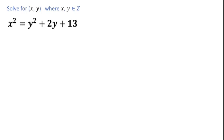Welcome to Definite Mind. In this question we have to find all pairs of x, y for this equation where x, y are elements of integers. This is the Russian Mathematics Olympiad 1983 question. I am going to solve this question.